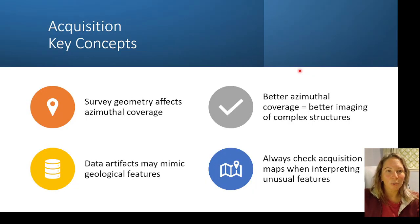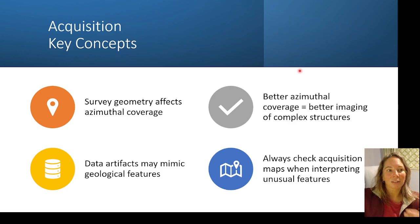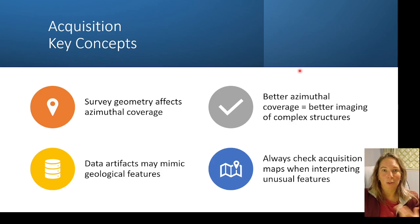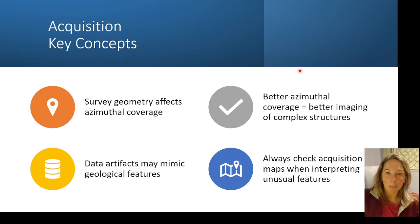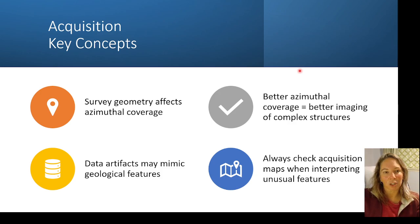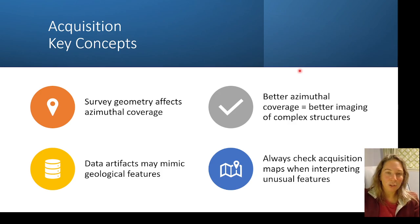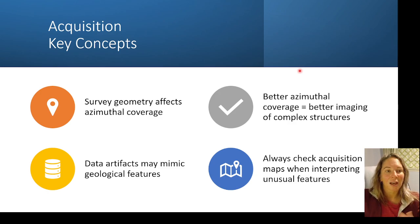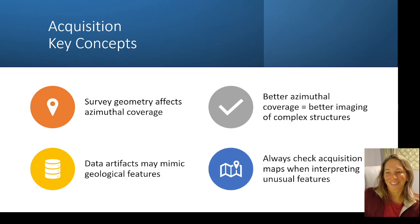To summarize a few key concepts: survey geometry really affects your seismic. It matters whether you have narrow or wide azimuthal coverage. Data artifacts from acquisition may mimic geologic structures. Better azimuthal coverage gives better imaging of complex structures. Always check the acquisition and processing reports if you have access to them — maps of where and how data was collected can help you understand unusual features you encounter during interpretation. Thanks for listening; I'll see you next time.